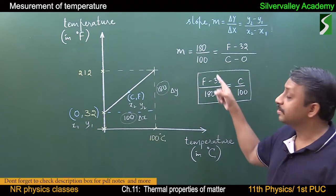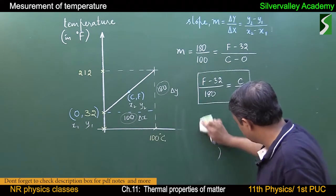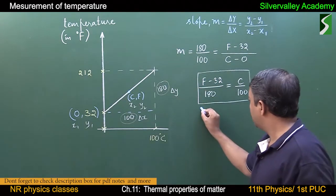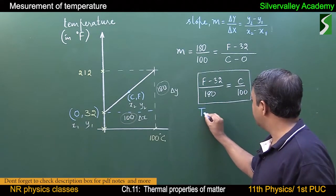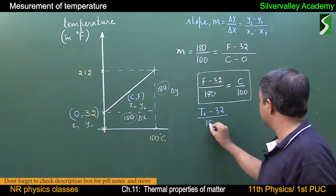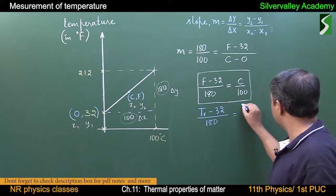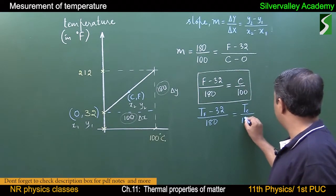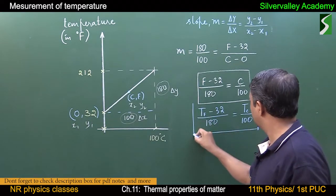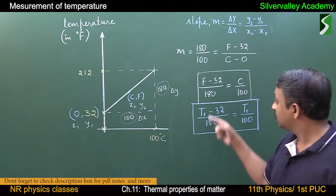So this is the equation derived using slope. Instead of writing F and C, we can write it as: (T_F − 32) / 180 = T_C / 100. This equation can also be used — it is just a change in notation.